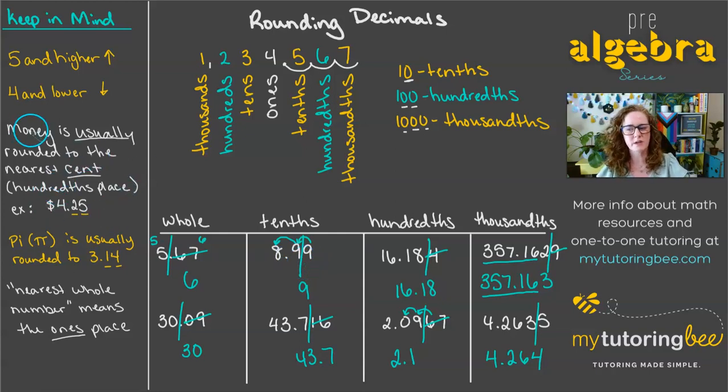If it doesn't, I do have just a couple of notes to go over here. If you're working with money, then money is usually rounded to the nearest cent. So that means the nearest hundredths place, because typically we have two decimal places after. And I know we talked a lot about not needing to write any extra zeros at the end. If you have, let's say that this, this 43.716, that this was a money problem. In this case, I would write in that extra zero at the end, because you always want to have two place values after the decimal when you're talking about money.